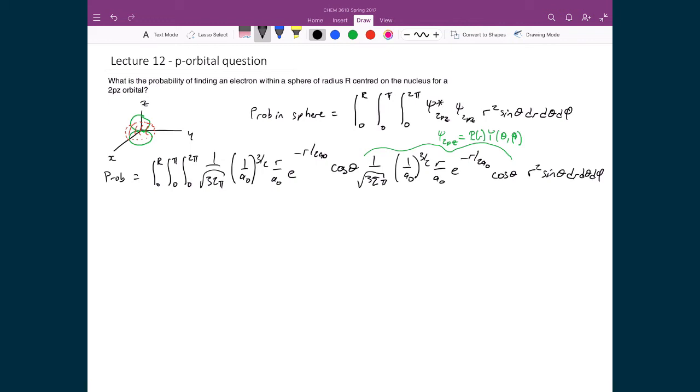My next thing to do here is to start grouping together like terms. I can pull out a bunch of constants up front. I have 1 over √(32π) and 1 over √(32π).